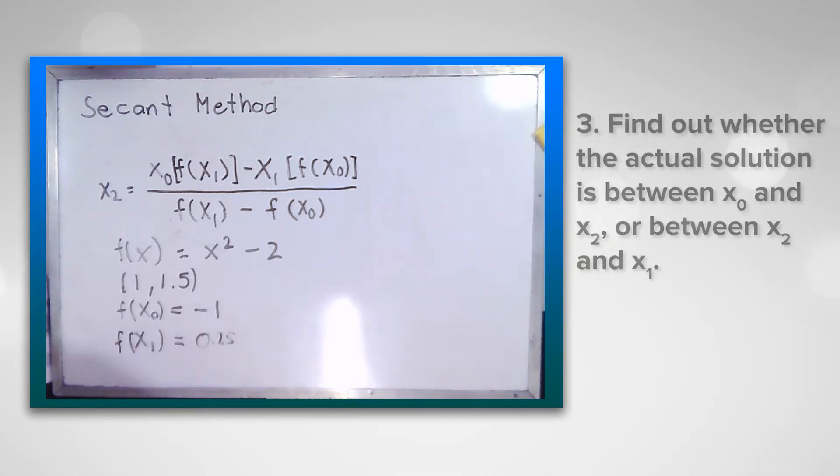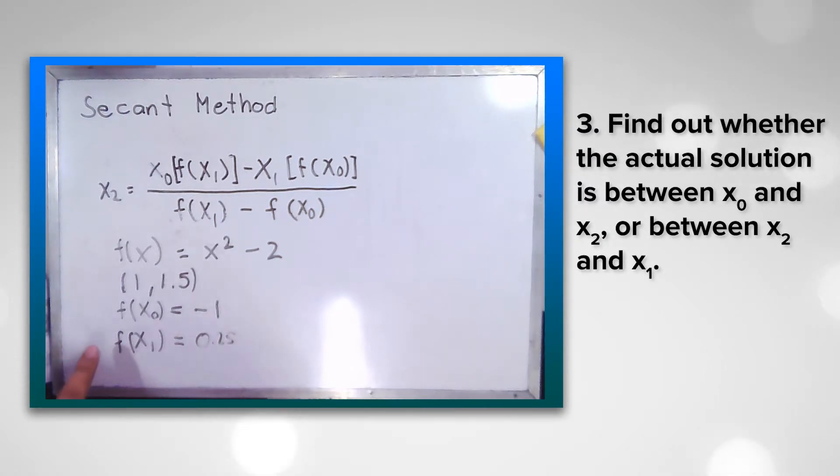Third is find out whether the actual solution is between x₀ and x₂ or between x₁ and x₂. I hope you don't get confused. So basically just means that we're going to compare f(x₀) with f(x₂) or f(x₁) with f(x₂), which is like the same on the bisection method and the false position method, because we're going to need this as we go on with our iterations.